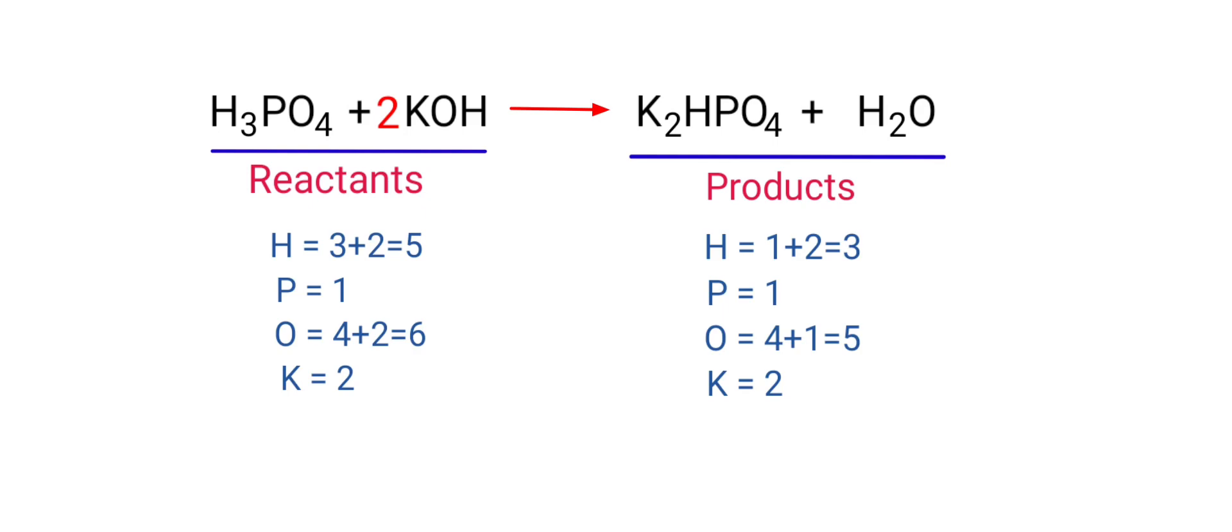The potassium atoms are balanced. Now we need to balance the hydrogen and oxygen atoms. To do this, we need to put a coefficient of 2 in front of H2O.